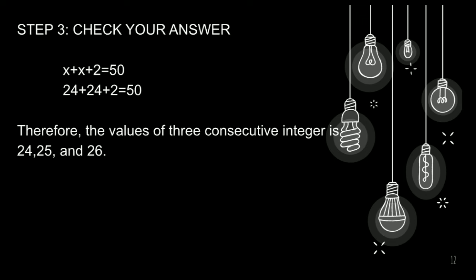So, x+x+2 is equals to 50. Since ang value ng x ay 24, papalitan natin ito. Kaya, magiging 24+24+2 is equals to 50. Therefore, the values of 3 consecutive integer is 24, 25, and 26.